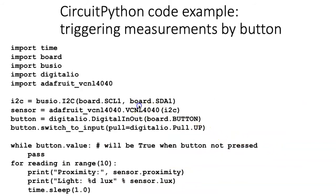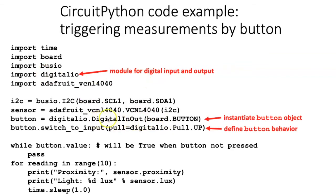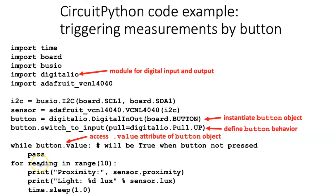Here's how we use this in code. First, we import the module for digital input and output, then define an instance of a digital in-out object called button, associated with the button on the board. We specify that the button operates with a pull-up resistor and as an input. Once defined, we check the value of button.value. It returns zero if the switch is open — not pressed. Once pressed, it gets grounded out, changing the value to false, which causes the while loop to stop executing and passes execution to the next line: the for loop that takes 10 measurements.